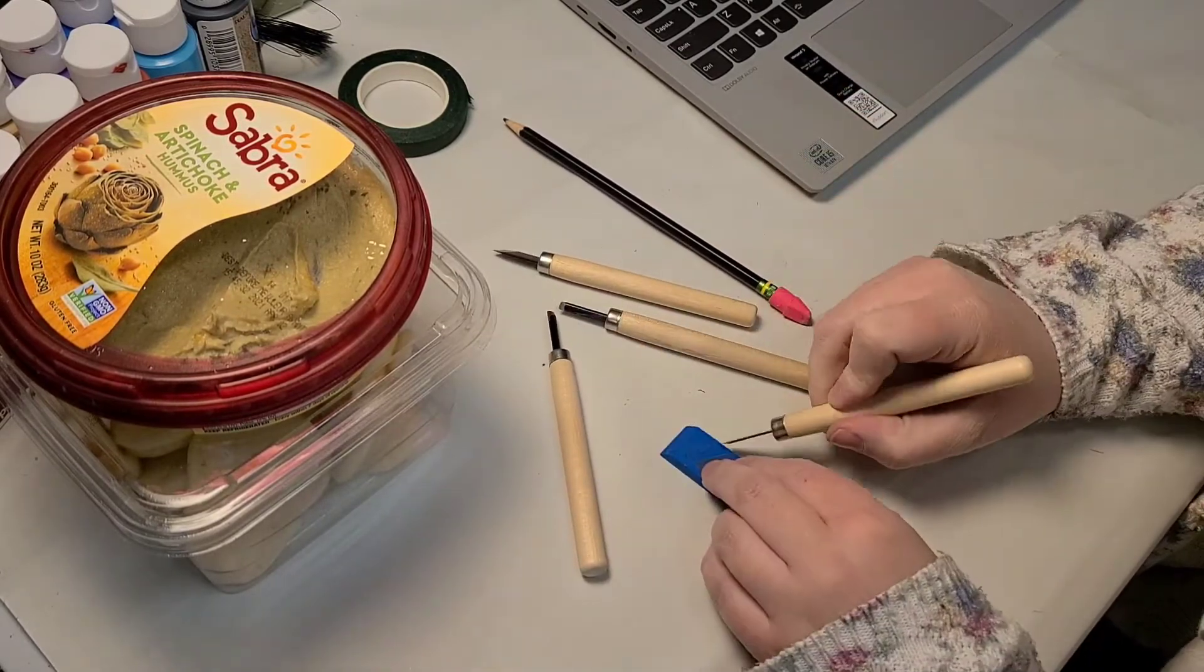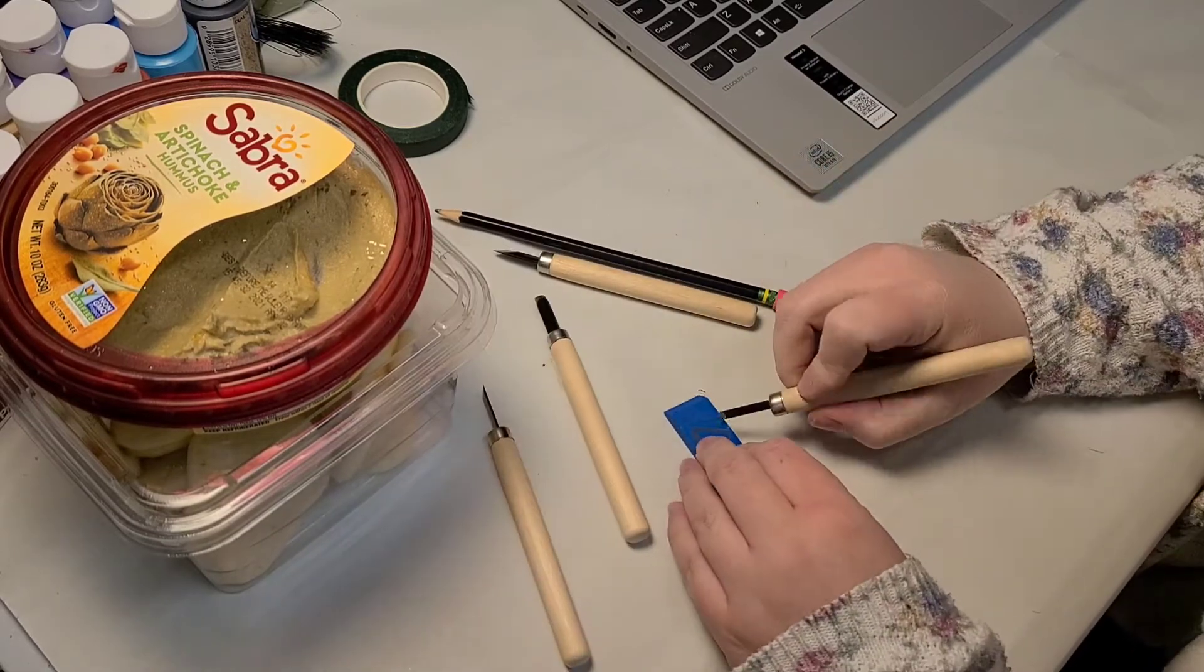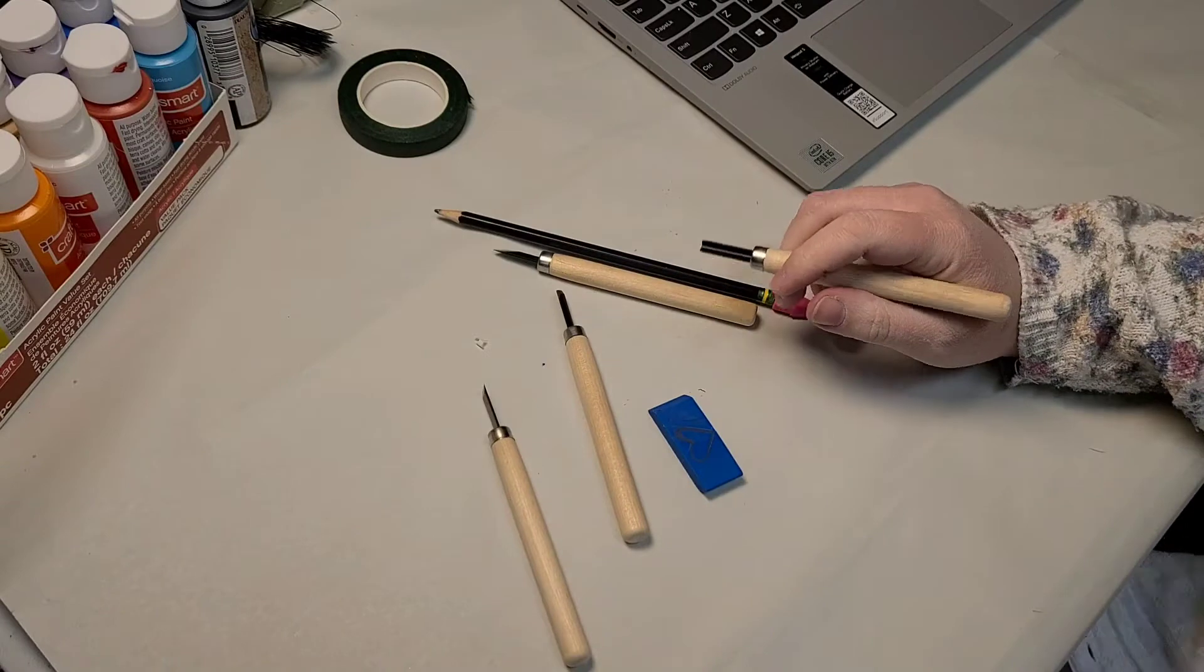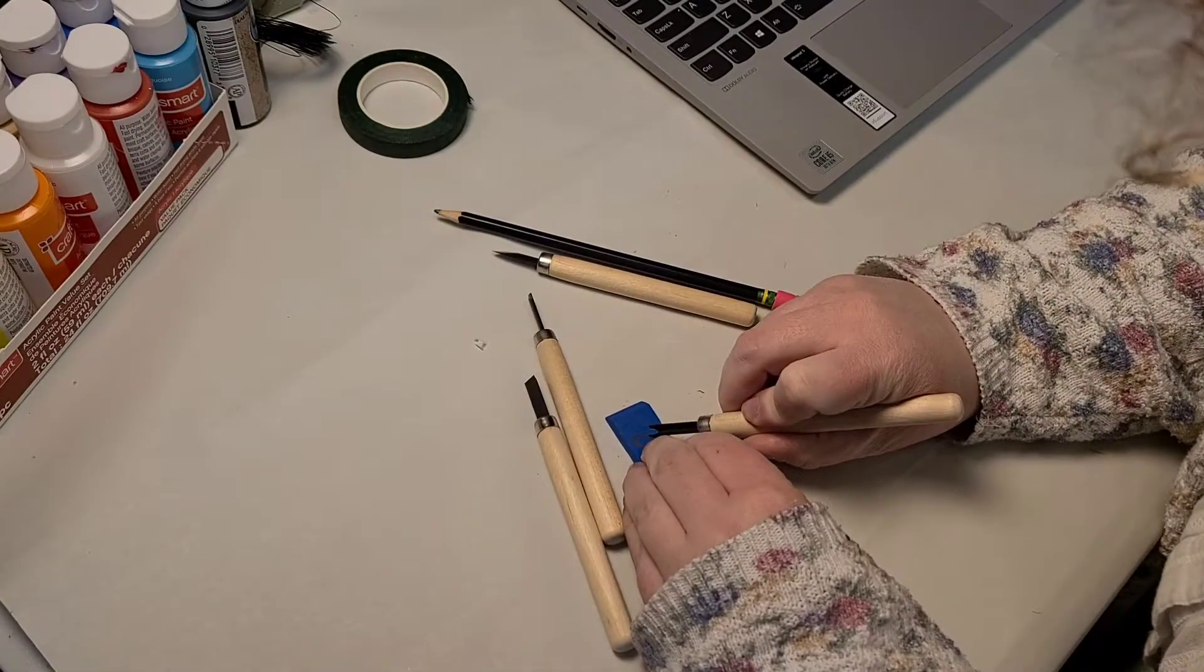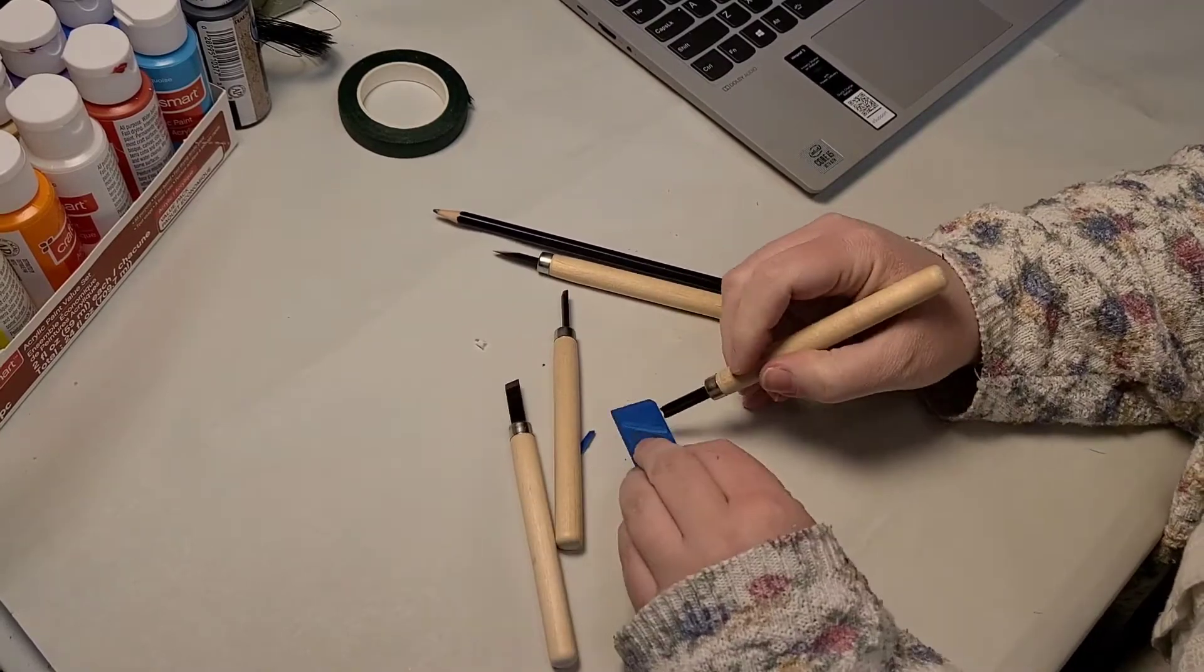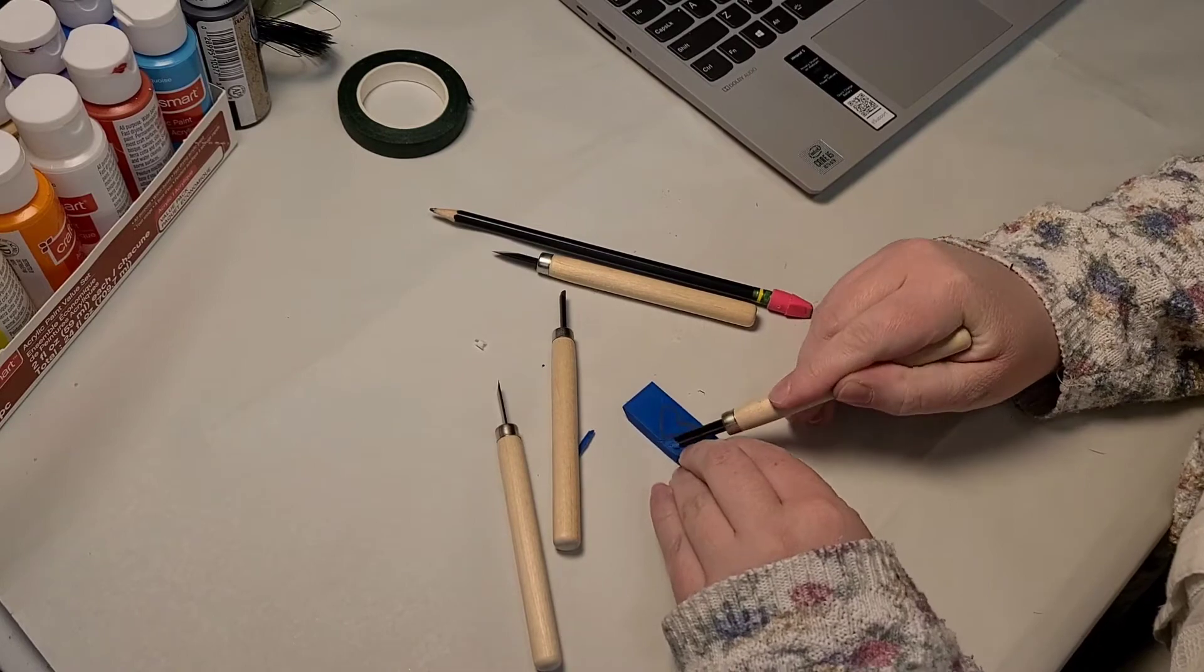This is definitely also not an advertisement for the Sabra spinach and artichoke hummus. I highly recommend it though. It was delicious. And that's about the time that I remembered that I had it there. So first things first, I bought the carving tools for these stamps from the Dollar Tree.